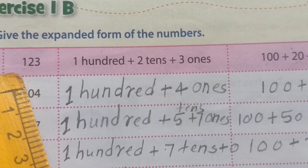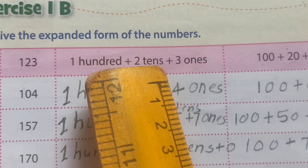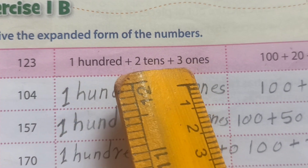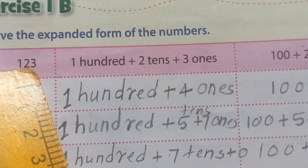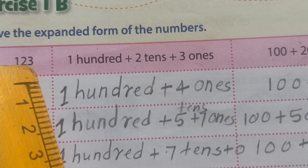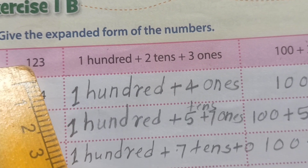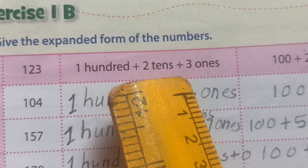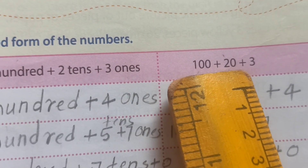Then 120 means plus 2 tens. 123: 3 ones. 1 means 100, 2 means 20 — 2 tens or 20. And 3 ones. This one number we expand two types. First type: 100 plus 2 tens plus 3 ones. Another type: 100 plus 20 plus 3.